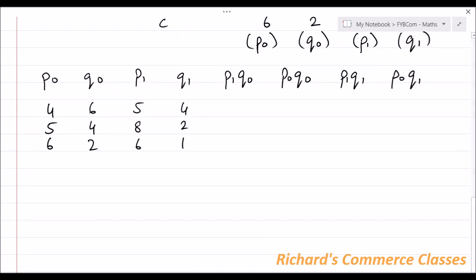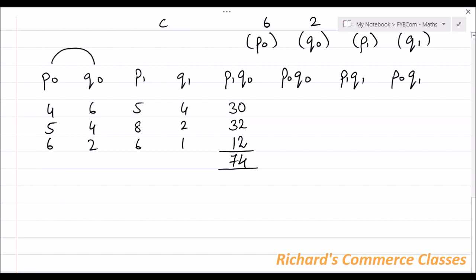For P1Q0, we multiply the P1 column with the Q0 column: 6×5 = 30, 4×8 = 32, and 2×6 = 12, giving a total of 74. For P0Q0, multiplying the P0 and Q0 columns: 4×6 = 24, 5×4 = 20, and 6×2 = 12, giving a total of 56.